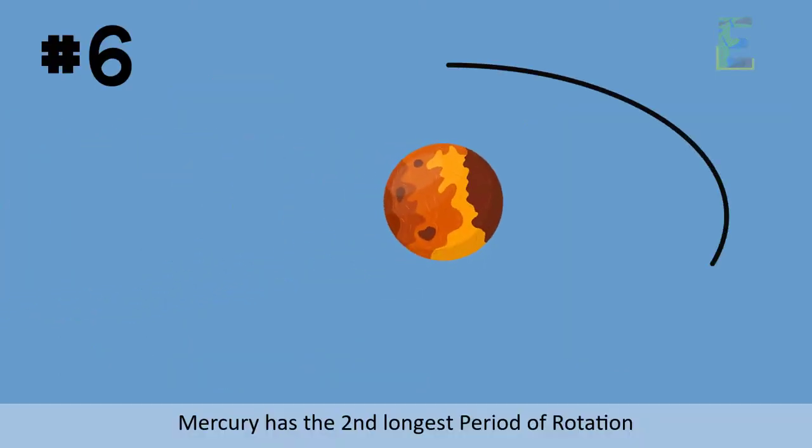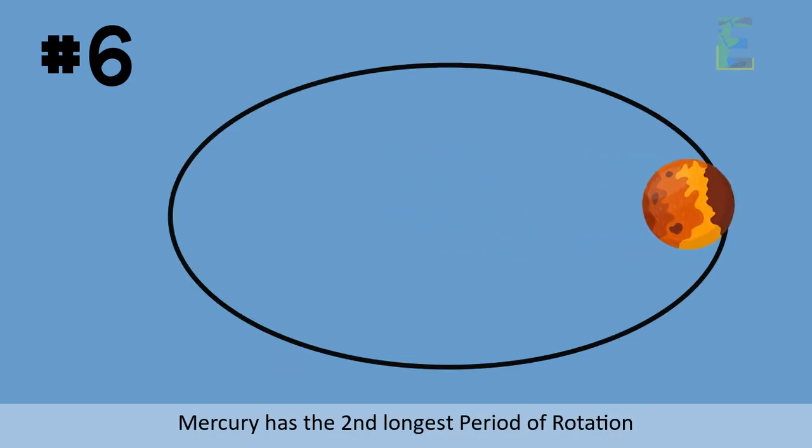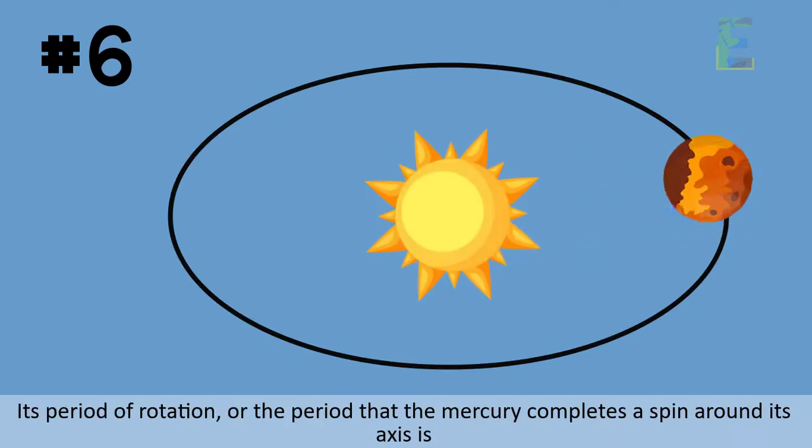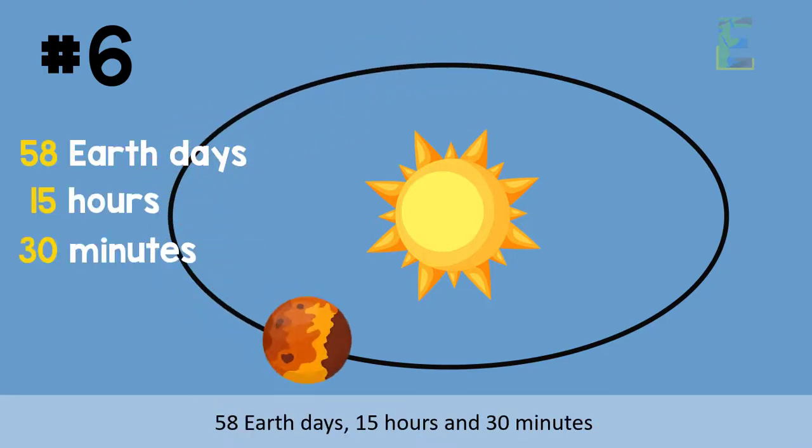Number 5. Mercury has the second longest period of rotation. Its period of rotation or the period that Mercury completes a spin around its axis is 58 Earth days, 15 hours and 30 minutes.